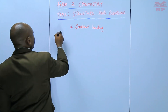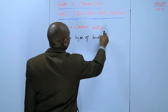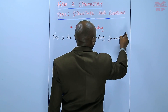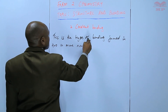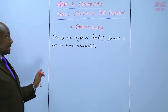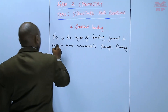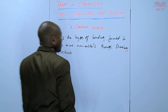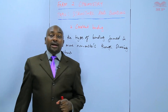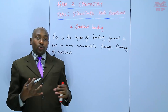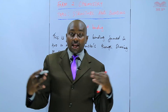This is the type of bonding formed between two or more non-metals only — through sharing of electrons. For those non-metals that do not have a stable electron arrangement, they can bond together by sharing their outermost electrons in such a way that they gain stability.